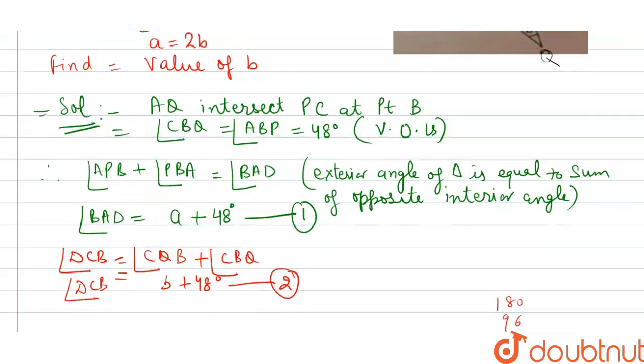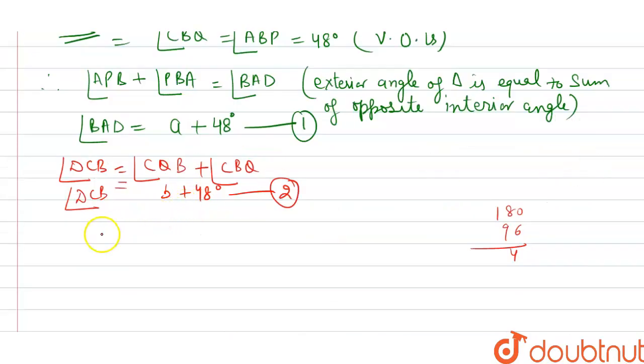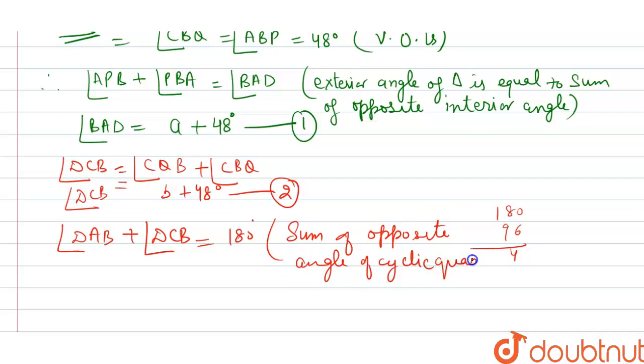Then, you know, the sum of opposite angles of a cyclic quadrilateral is 180 degrees. So angle DAB plus angle DCB equals 180 degrees. The reason is: sum of opposite angles of a cyclic quadrilateral is 180 degrees.